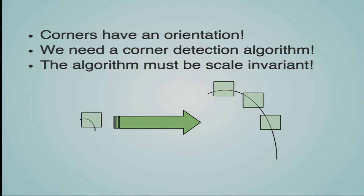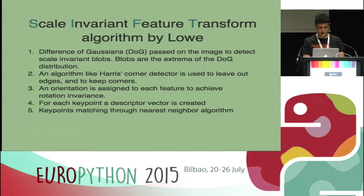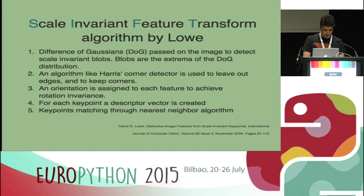We need a corner detection algorithm, and this algorithm should be scale-variant. The reason is shown in the figure: a scale-invariant algorithm will recognize a left line as a corner, but will recognize the same line at a larger scale as two or three corners. For this reason, we need a scale-variant algorithm. The solution is the Scale-Invariant Feature Transform (SIFT) algorithm by David Lowe.